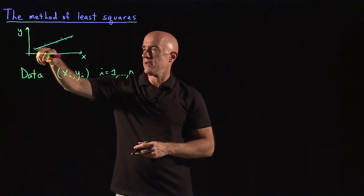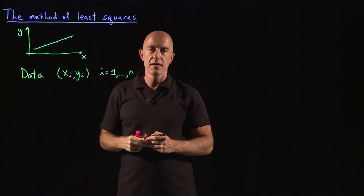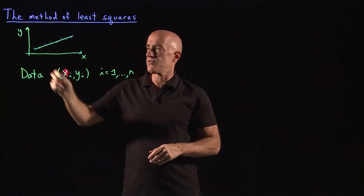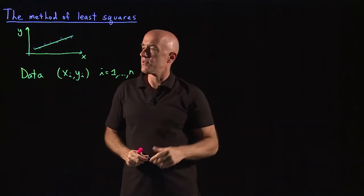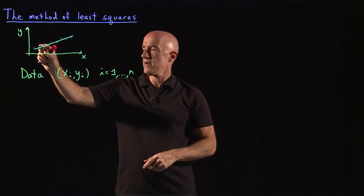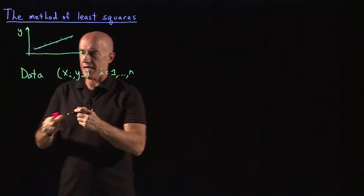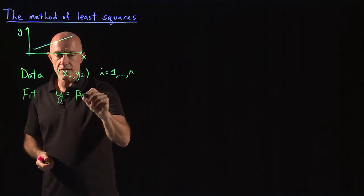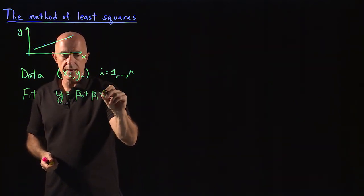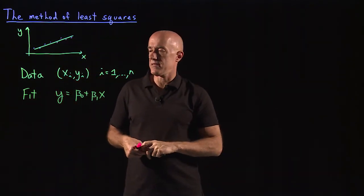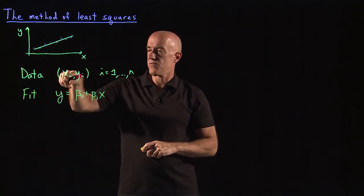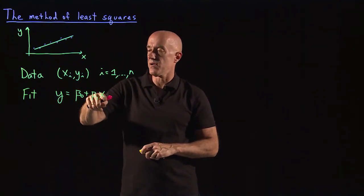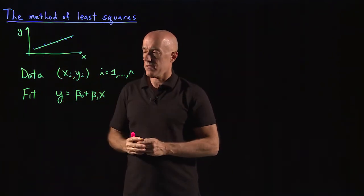The theory may suggest that this data should fit a straight line, and you want to draw the best straight line through the data points — typically because you're interested in the slope of the line. So we want to fit a line to the data. The fit is the line y = beta_0 + beta_1 * x, where the dependent variable is related to the independent variable by a linear relationship.